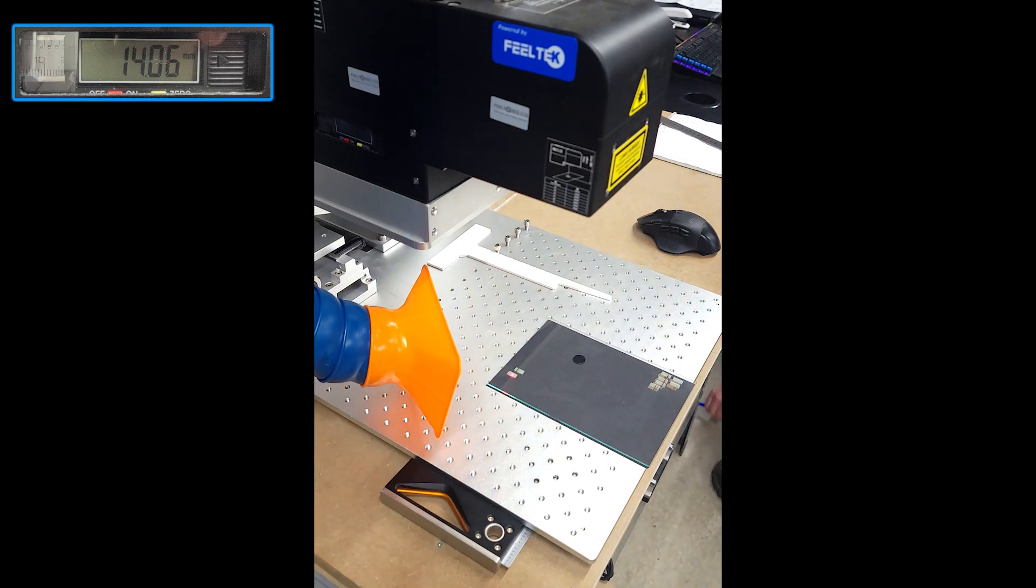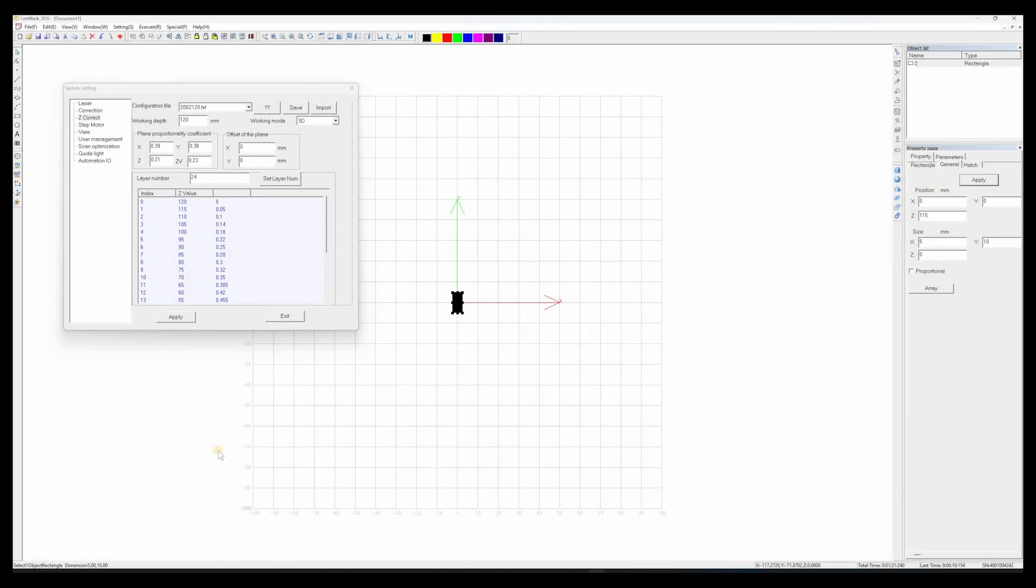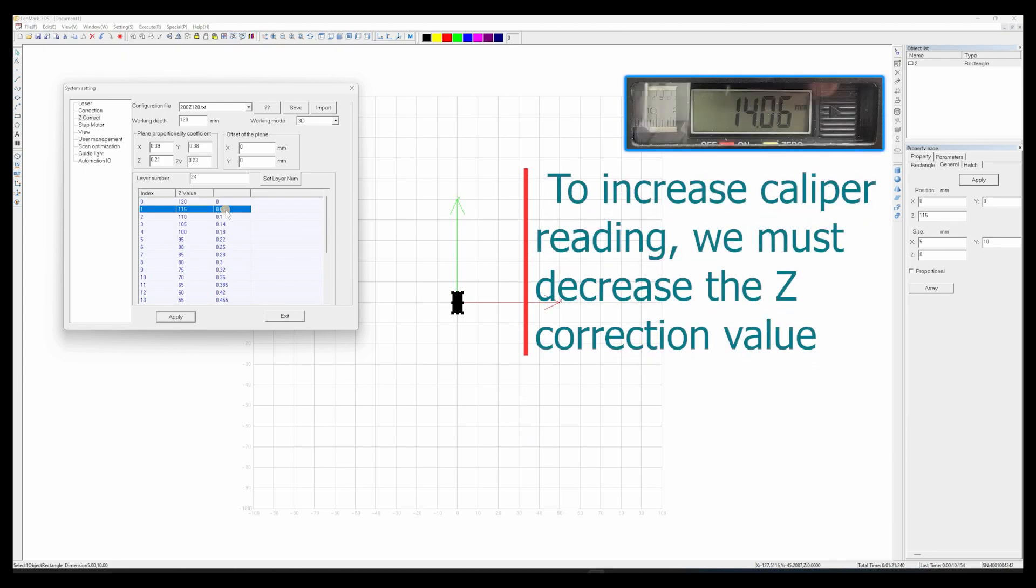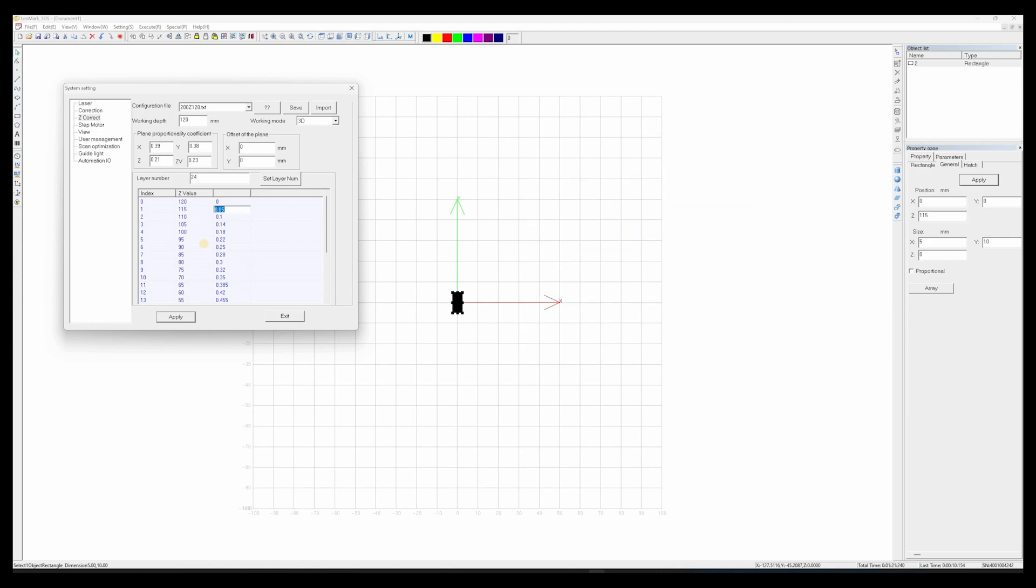Now again, we're going to reference our caliper value. So we're at 14.06. What we need to do is adjust our Z calibration value until we get that strong beam at 14.15 again. Now I've mentioned that the reading from that was 14.05. We need that value on the caliper to go up. Now to do that, we're going to lower our Z value. Let's try 0.04. We'll hit apply.